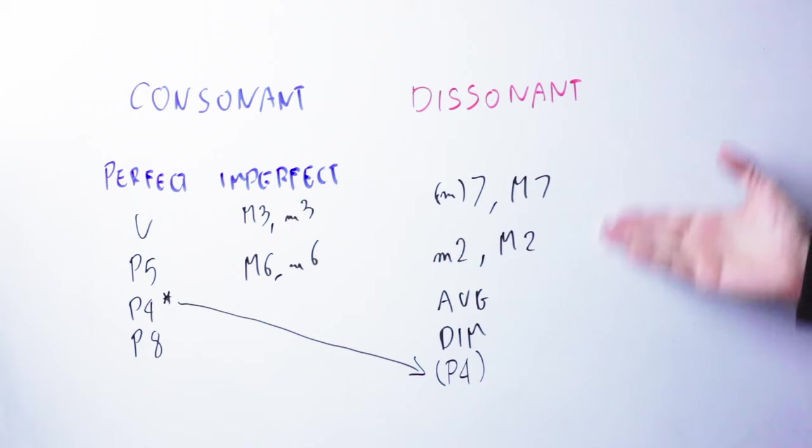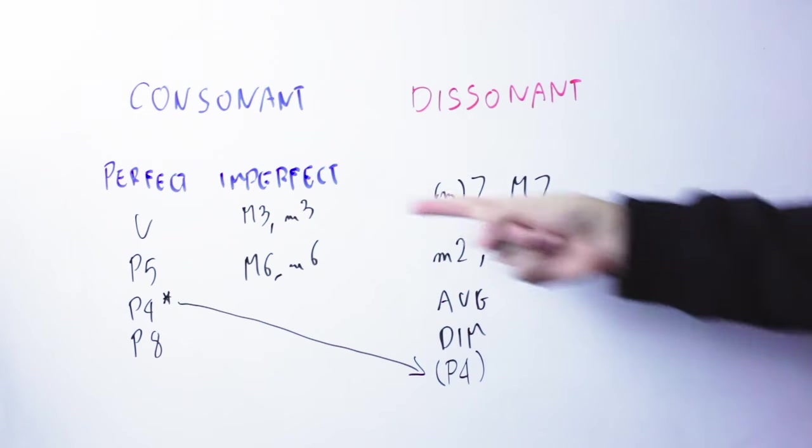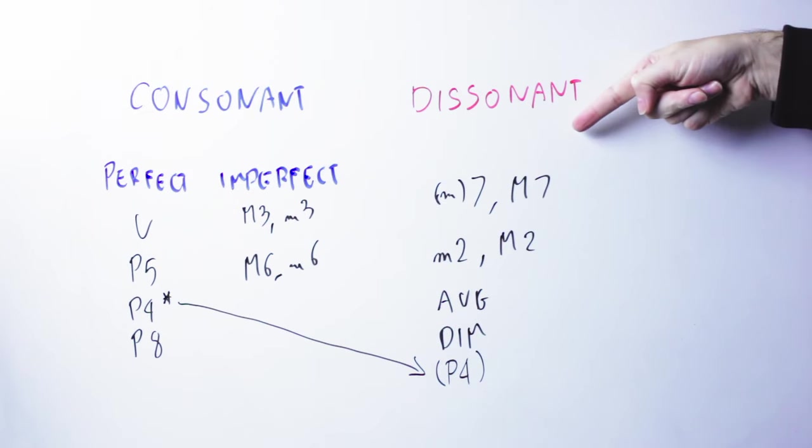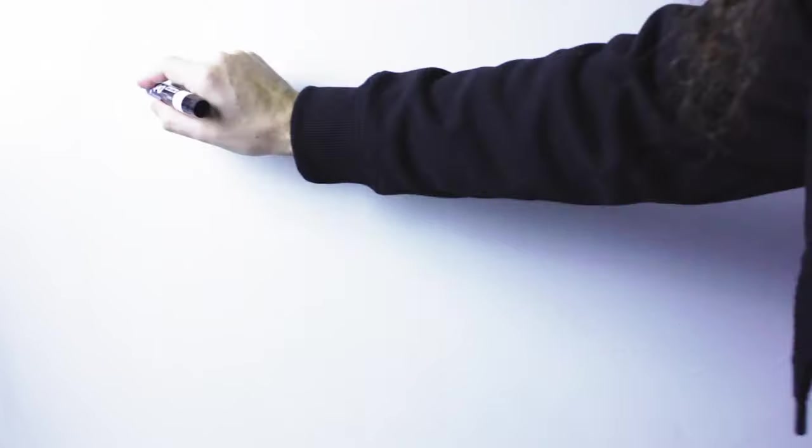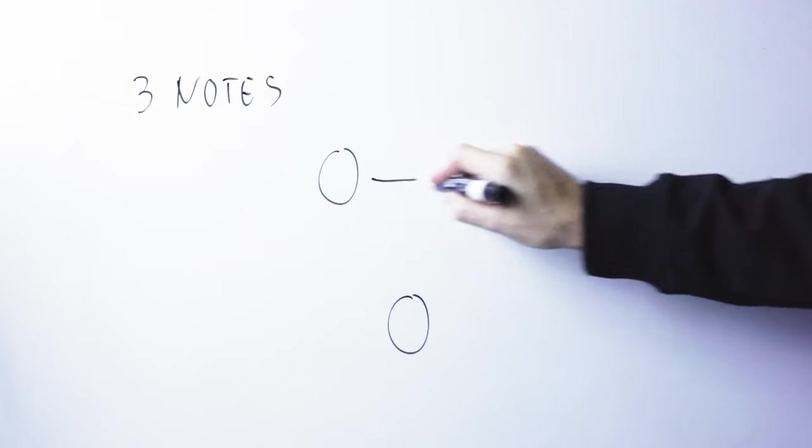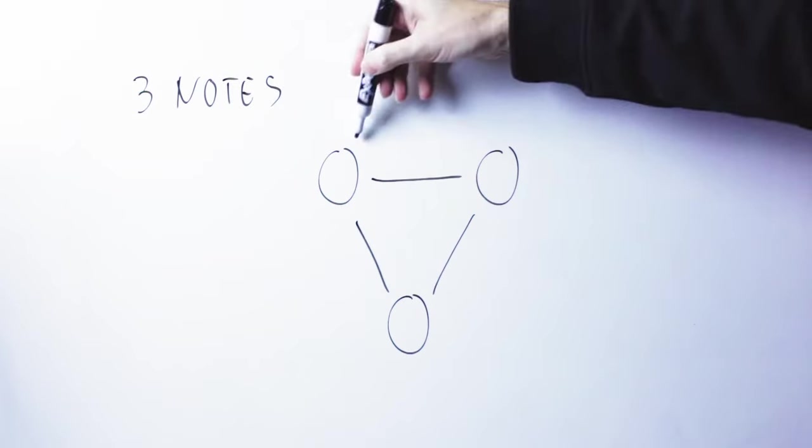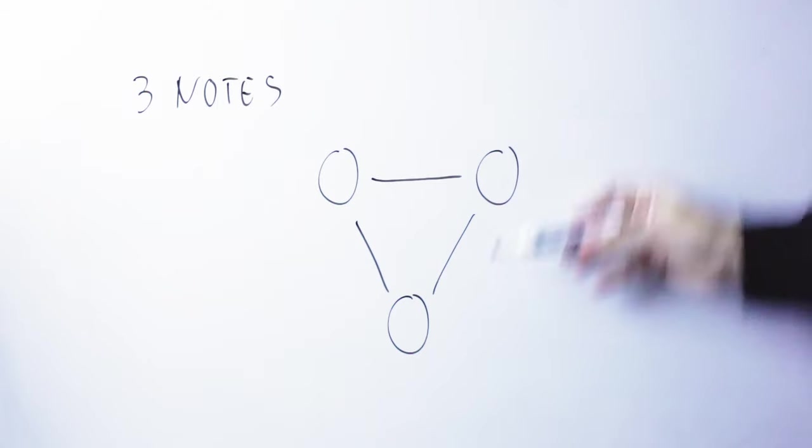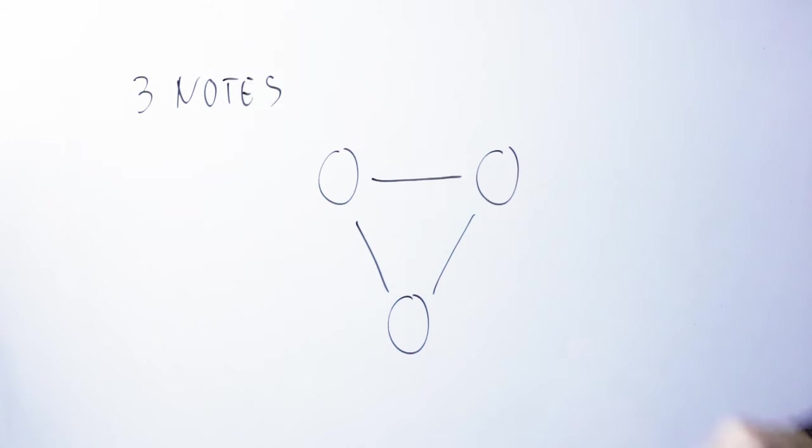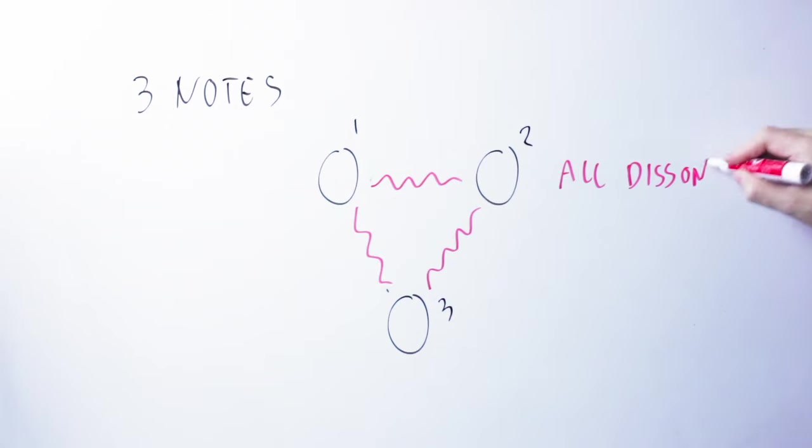So, I can choose two notes so that they are consonant, or I can choose two notes so that they are dissonant. I can also choose three notes. And if I have three notes, now I have three relationships to care about. The relationship between note one and note two, the one between note two and note three, and the one between note one and note three. Can I choose those three notes so that they are all dissonant?